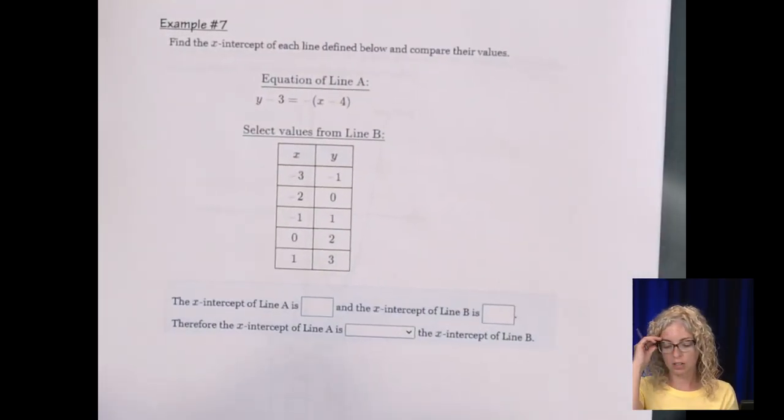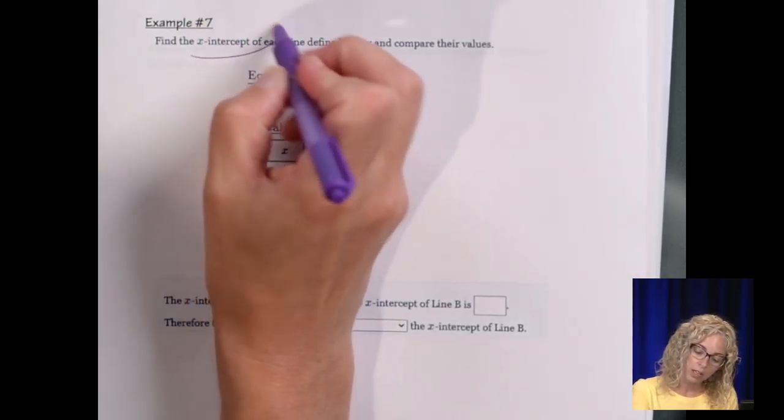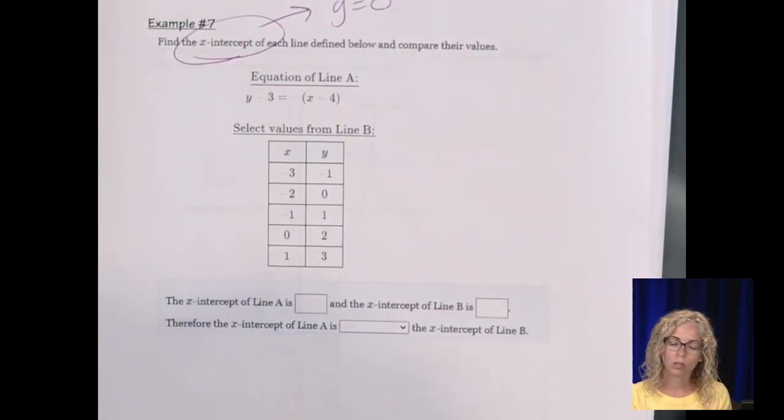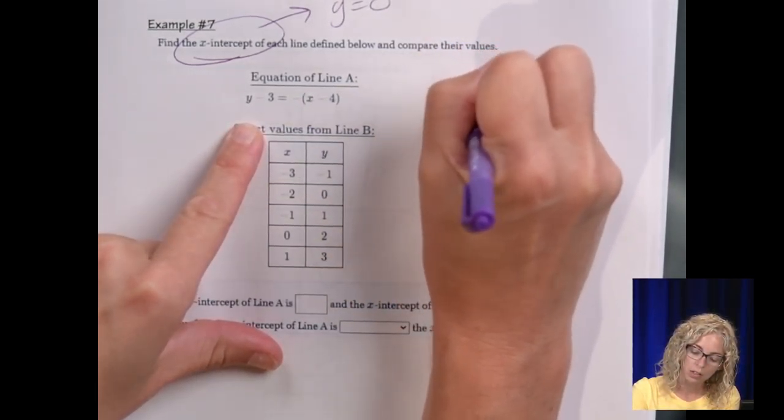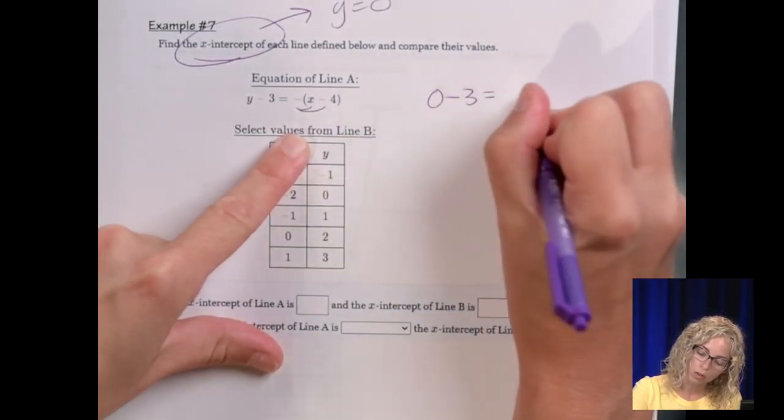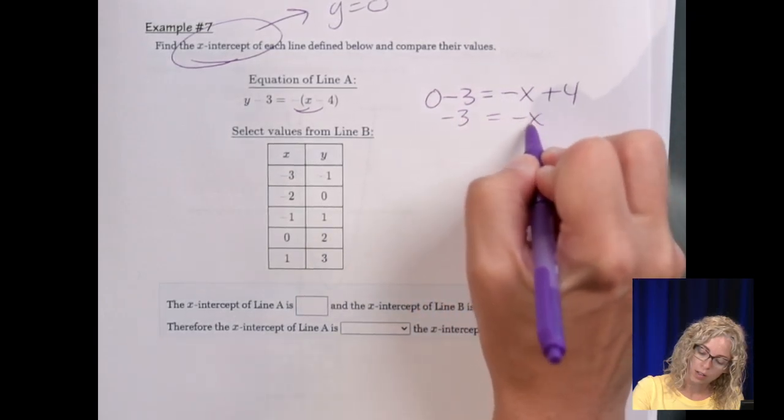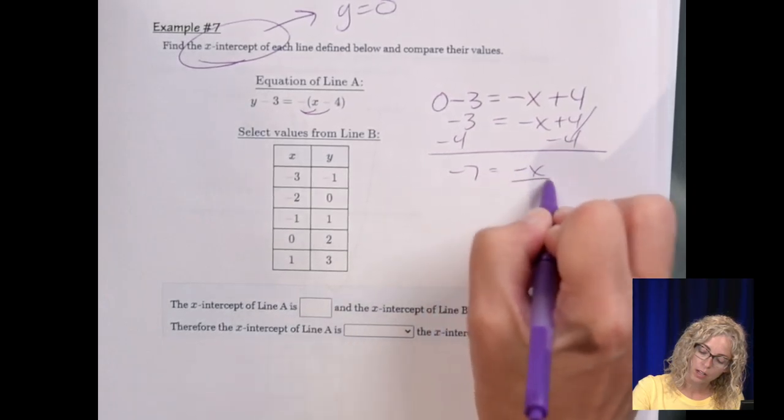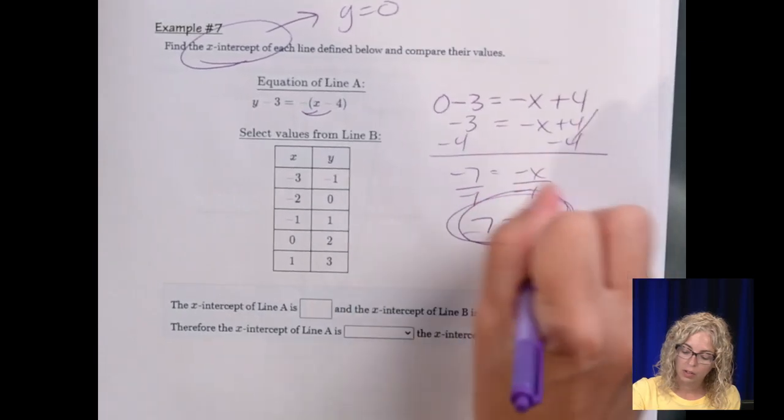All right, 7. Find the X intercept of each line defined below and compare their values. So anywhere on the X axis, we know that Y is 0. So we simply just plug in 0 for Y and solve for X. So this would be 0 minus 3, and I'm going to distribute. So negative X plus 4. So negative 3 equals negative X plus 4. Subtract 4. Negative 7 equals negative X. Divide by negative 1. And 7 equals X. So our X intercept there is 7.